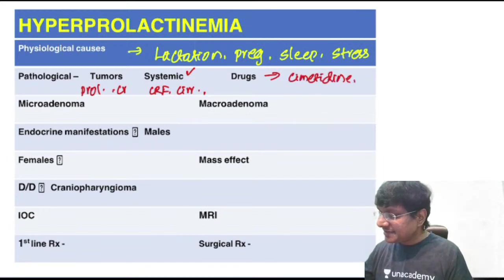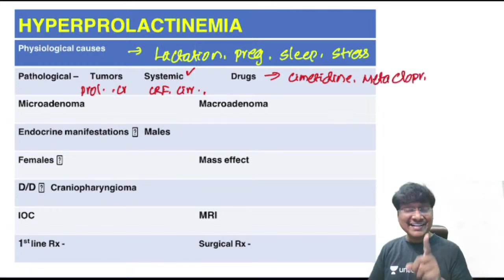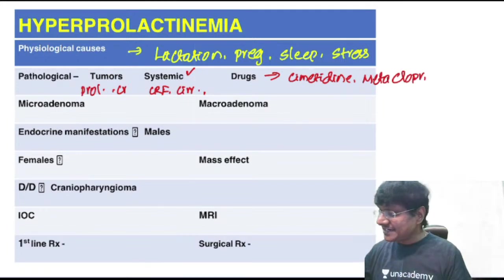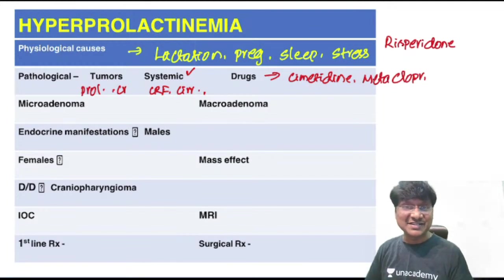Drugs causing hyperprolactinemia include cimetidine, metoclopramide (an anti-emetic), and atypical antipsychotics such as risperidone.